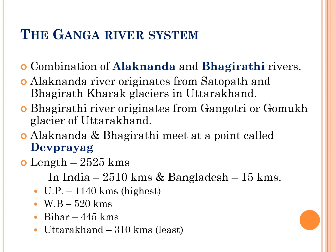The Ganga river is a combination of two rivers: Alaknanda and Bhagirathi. Alaknanda river originates from Sathopar and Bhagirathi Kharak glaciers in Uttarakhand, and Bhagirathi river originates from the Gangotri or Gomukh glacier of Uttarakhand. These two rivers meet at a point called Devprayag, where Bhagirathi meets Alaknanda, and from this point onwards it takes on the name Ganga. The total length of the Ganga river is around 2,525 kilometers.